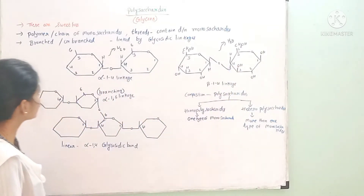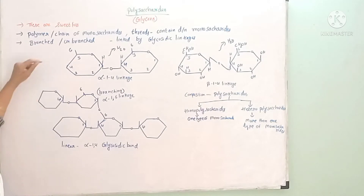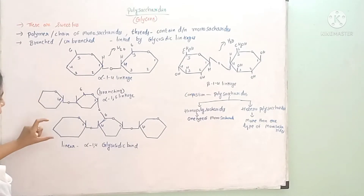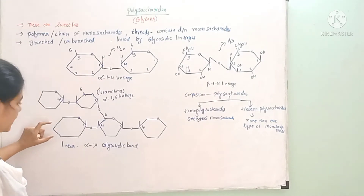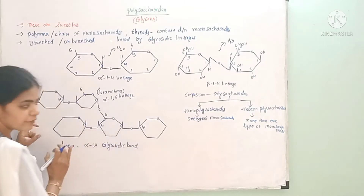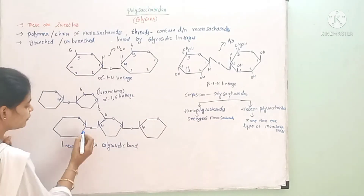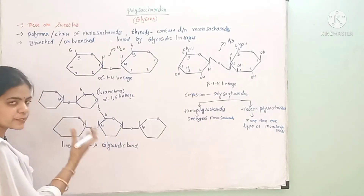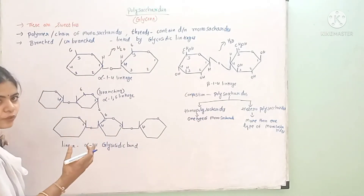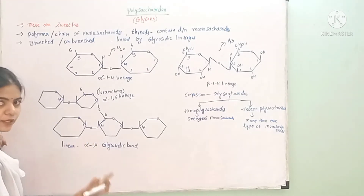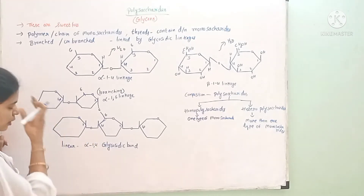So we can explain how we have branched or unbranched structures. There are different monomers with different linkages: alpha 1,4 linkage and beta 1,4 linkage.